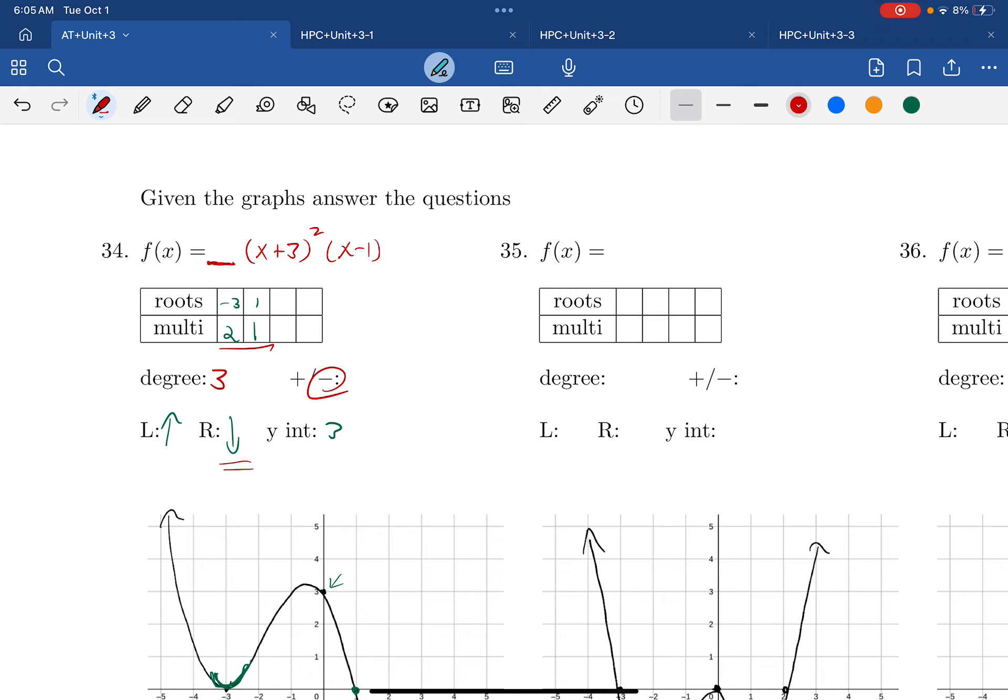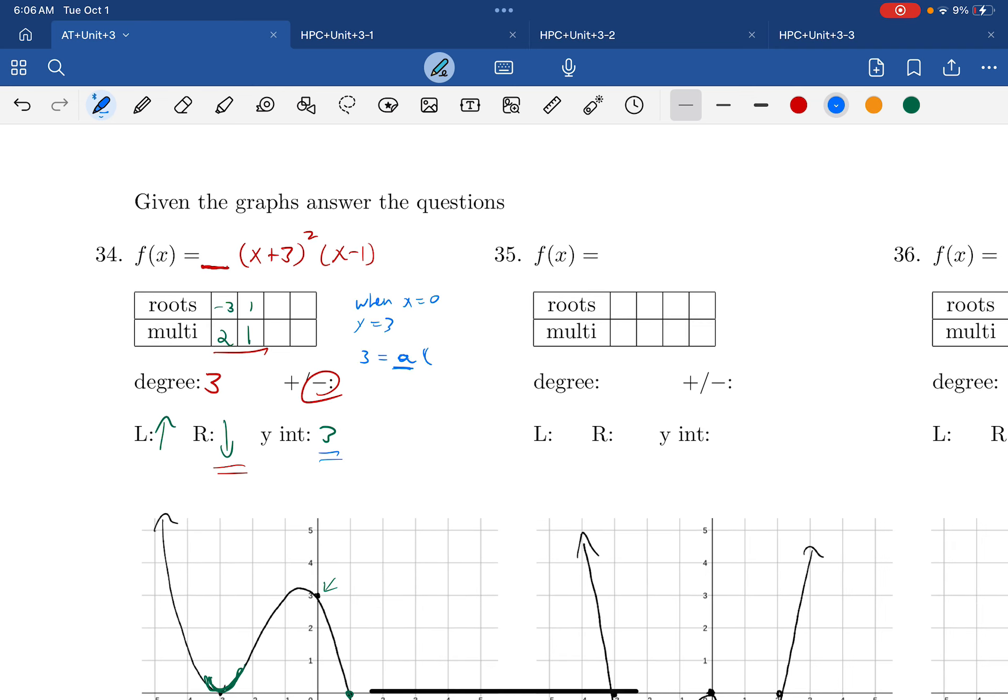Now, what about this number in the front? Well, what you're actually going to use is your y-intercept. Your y-intercept is when x is zero. So when x equals zero, y equals three. So what we can do is say, well, this must mean three equals some number out here. So I'm going to write an a, and I'm going to solve for it. But then everything else, the x's are zeros. So I'm going to say zero plus three squared, zero minus one. What does that mean?